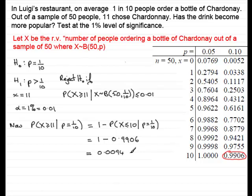And 0.0094 is less than 0.01, 1%, so we can write that in as being less than 1%. So if Ho were true, then the chances of getting more than 11 or equal to 11 people choosing Chardonnay is incredibly small, yet it's happened.